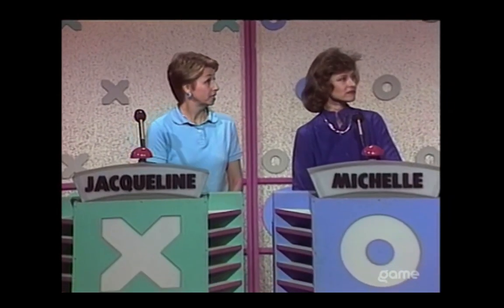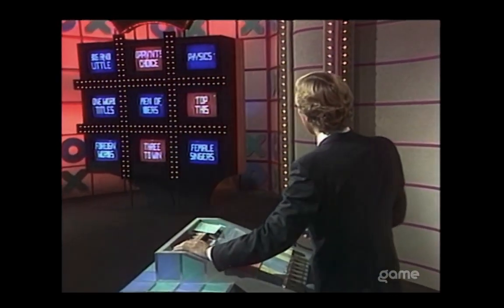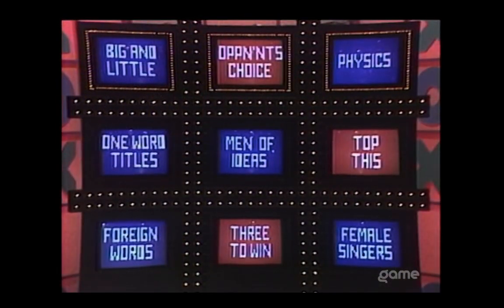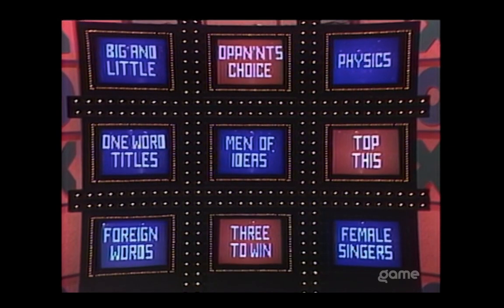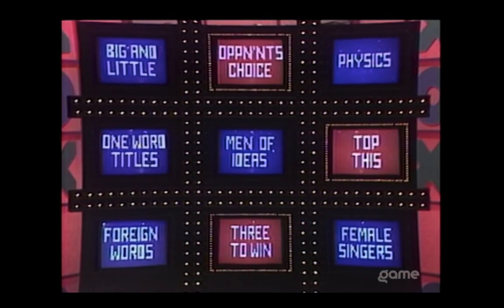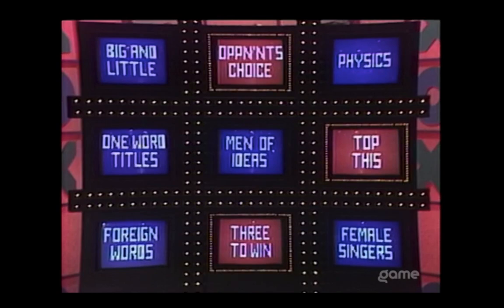Michelle DeBoe are the players. And take a look at these nine categories for this game. Here they are: Big and Little, Opponent's Choice, Physics, One Word Titles, Men of Ideas, Top This, Foreign Words, Three to Win, and Female Singers. Those are the nine categories. The red boxes mean those are special categories, and I'll describe them if we get to them.